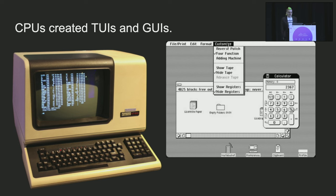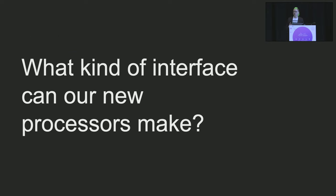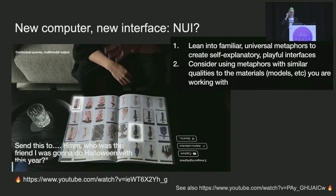CPUs, this different type of processor, created a bunch of user interfaces that we know and maybe love — the terminal user interface and the graphical user interface — that allow us to interface with the hardware. So what kind of interface can these new processors make? Right now the interfaces they're making are mostly just chatbots, but that's maybe just an artifact of history. With a new computer and a new interface, perhaps that interface is the NUI, the natural user interface.